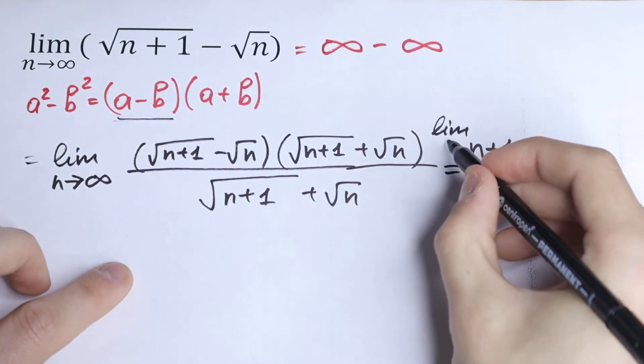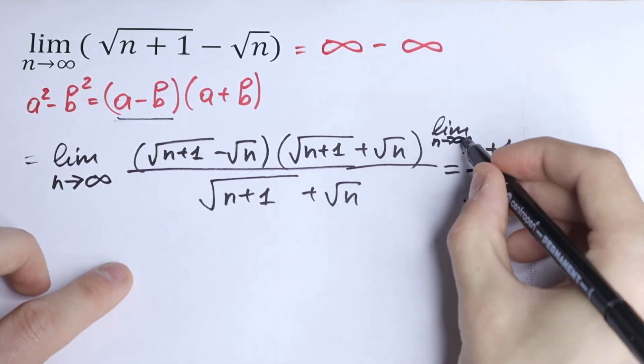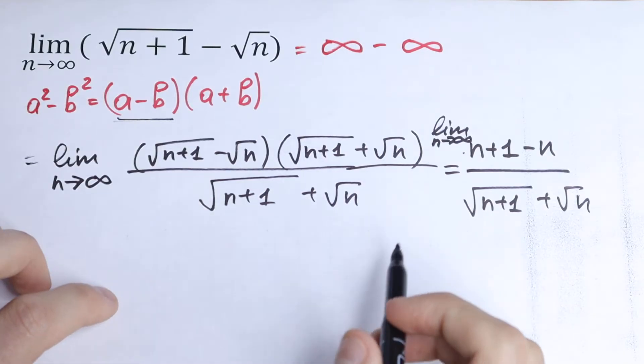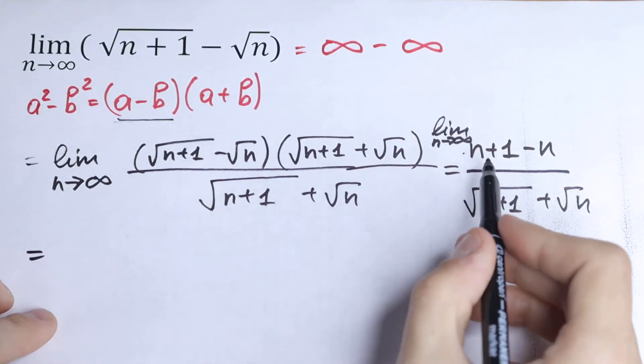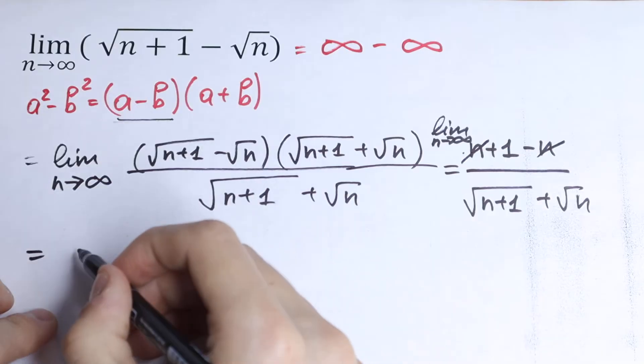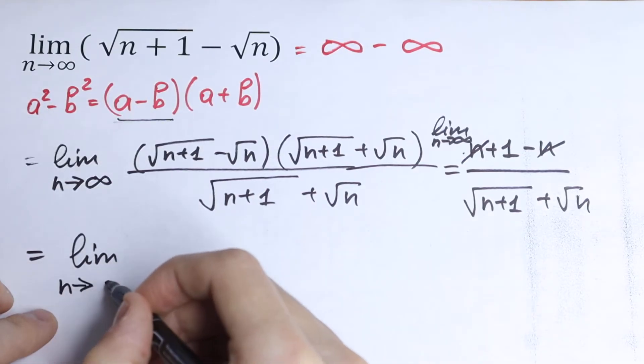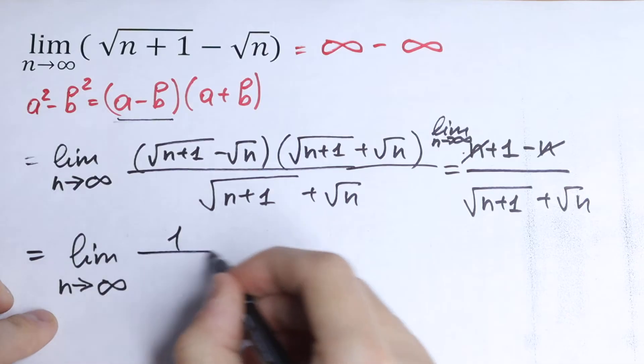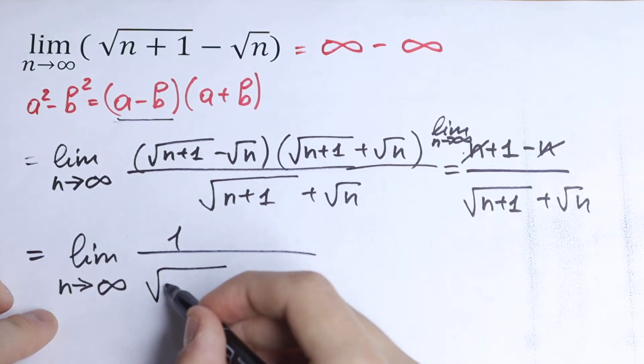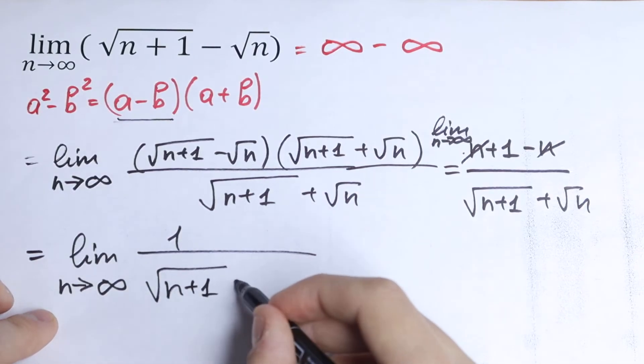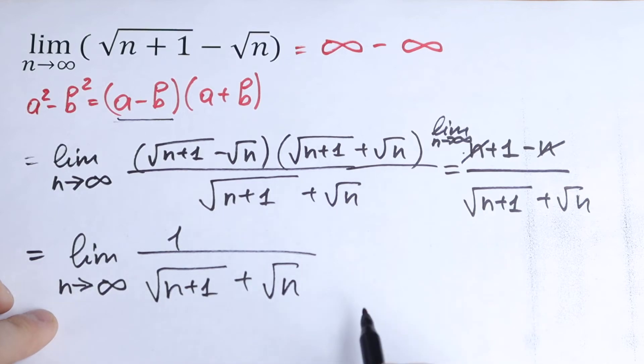And the limit as n approaches to infinity. Let's simplify this. This n and this n we can cancel. So we will have the limit as n approaches to infinity of 1 over square root of n plus 1 plus square root of n.